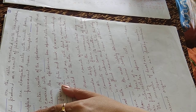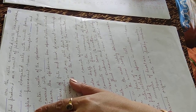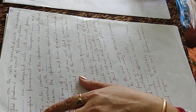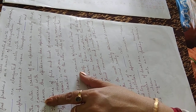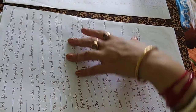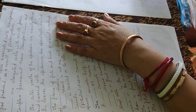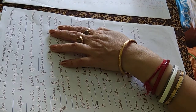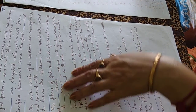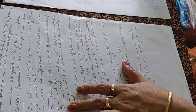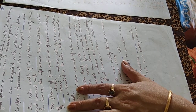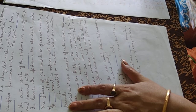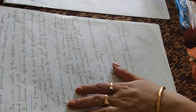Sieve cells are elongated cells with minute pores. Complex permanent tissue transports water and food materials. The outer walls of the epidermis are usually thick and covered with cutin. In leaves, the epidermis has special cells called guard cells. The fibers of jute and husk of coconut are made up of sclerenchyma tissue. Phloem is located on the outer side of the vascular bundle.